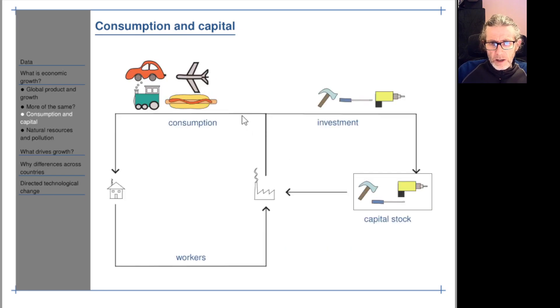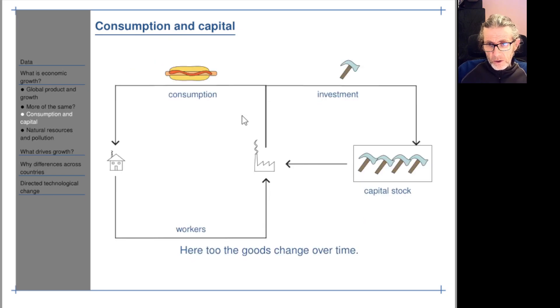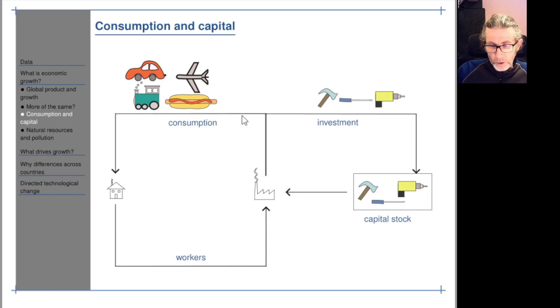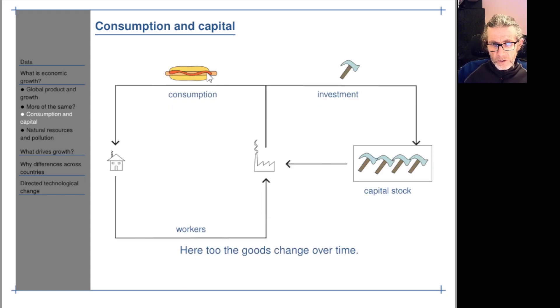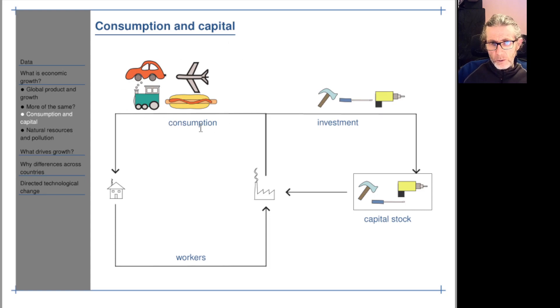And note that the goods change over time so we're talking about reality here. Over time this is a very simple economy we're basically producing food and some tools, but over time the range of goods changes, the range of investment goods also changes.